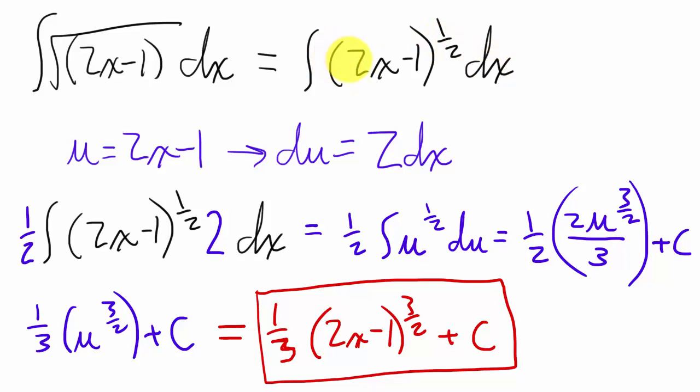For u substitution, what we want to do is usually use u equals this inner expression here. In this case, u equals 2x minus 1.